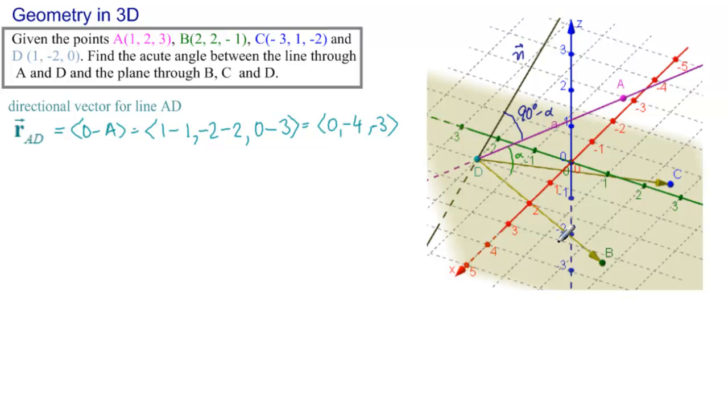Now let's get the directional vectors for DB and DC. The directional vector for DB is B minus D. B is (2, 2, -1) minus D(1, -2, 0). We have 2 minus 1 is 1, 2 plus 2 is 4, and -1 minus 0 is -1.